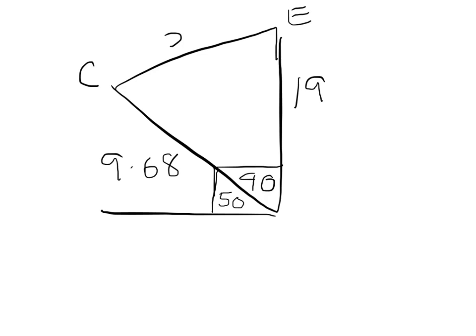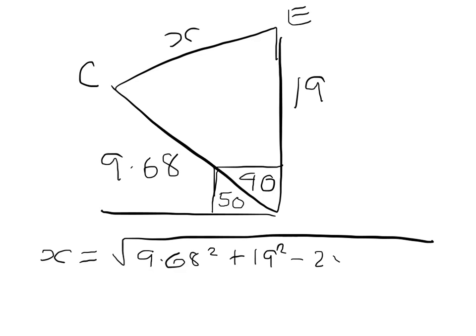So to find CE, we'll call that x, we can use the cosine rule. So the cosine rule tells us then that x will equal the square root of, quite a long expression, but you can just use the formula at the front of the book. So that would be 9.68 squared plus 19 squared minus 2 times 9.68 times 19 times cos 40.